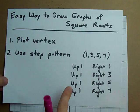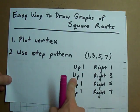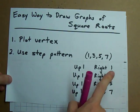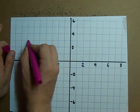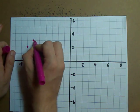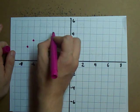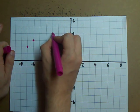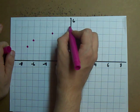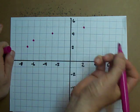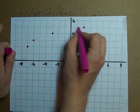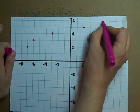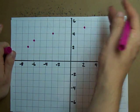Now the step pattern is up one right one, up one right three, up one right five. So let's do that. Up one right one, up one right one two three from that new point. Up one right one two three four five from that new point. Up one over one, up one over three, up one over five, up one over one two three four five six. I don't have room for seven.